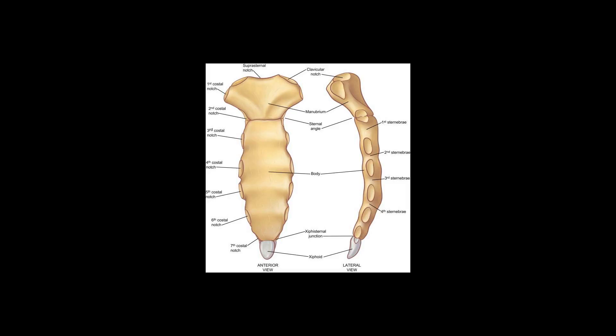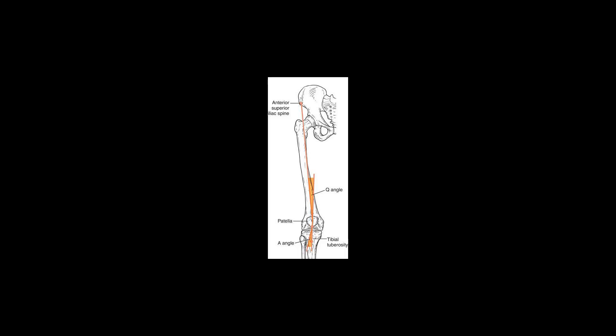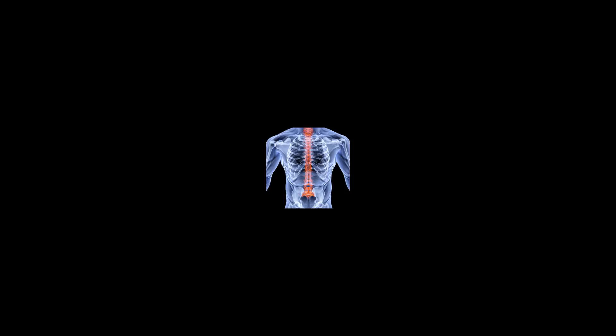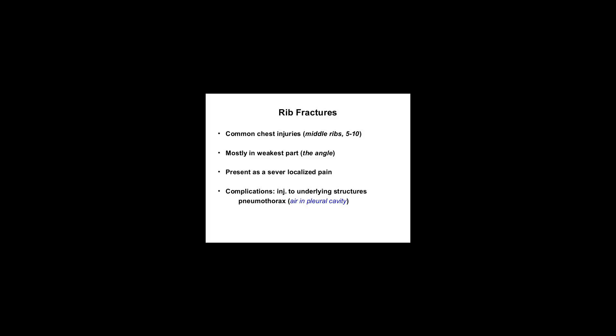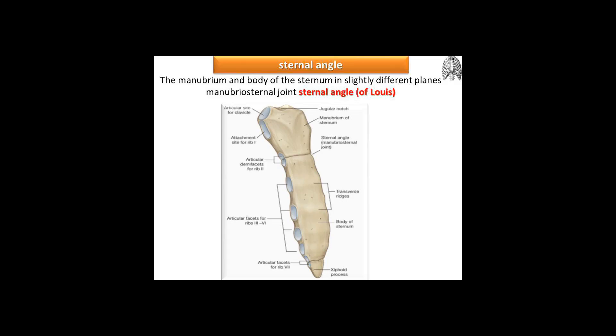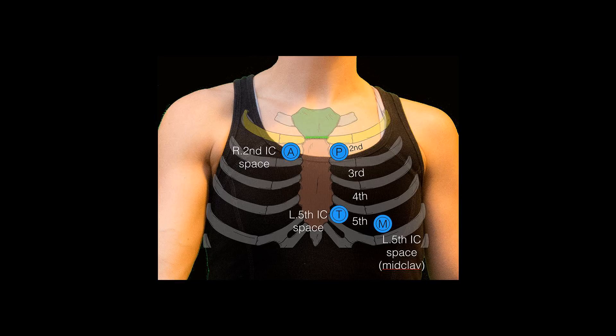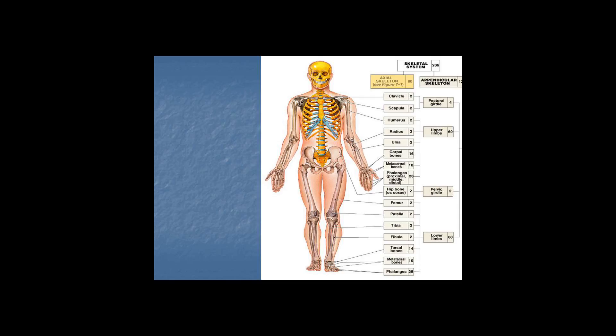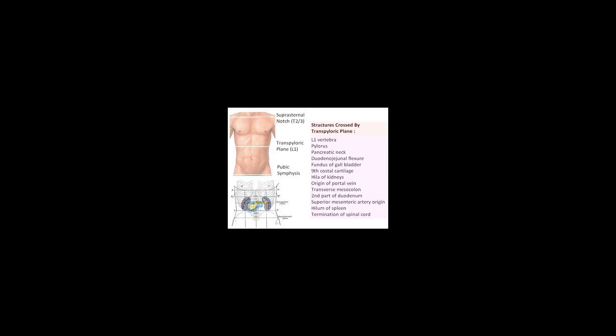Anatomy: the sternal angle, which varies around 162 degrees in males, marks the approximate level of the second pair of costal cartilages, which attach to the second ribs, and the level of the intervertebral disc between T4 and T5.